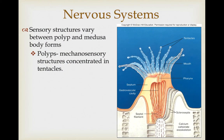Sensory structures vary between polyp and medusa forms. In polyps, it's primarily mechanosensory structures concentrated on the tentacles. The tentacles have cnidocytes with nematocysts—stinging cells—triggered primarily by touch and sometimes chemical stimulants. That's the primary mechanism of sensing in polyps.